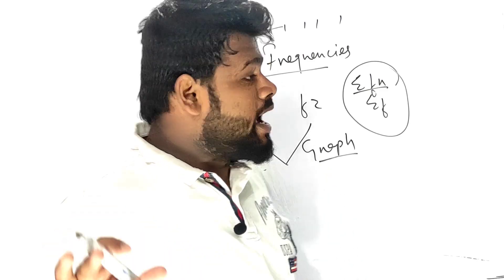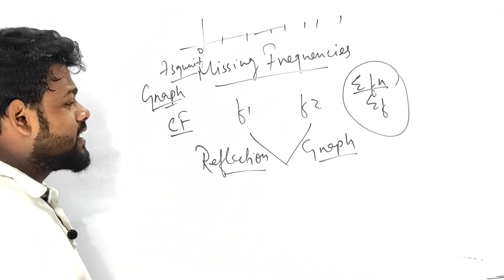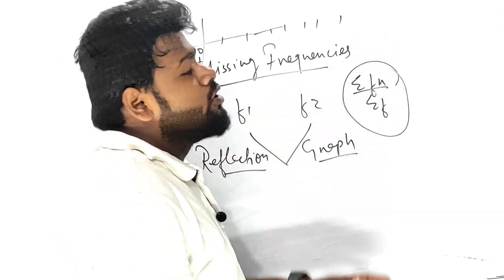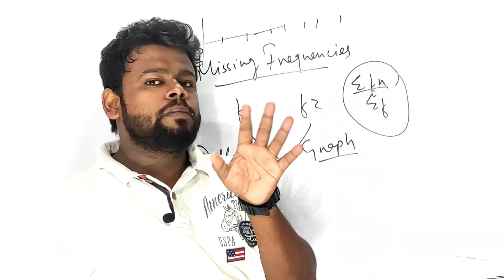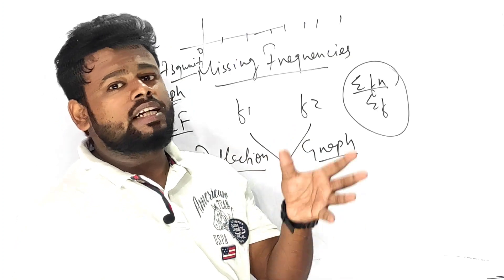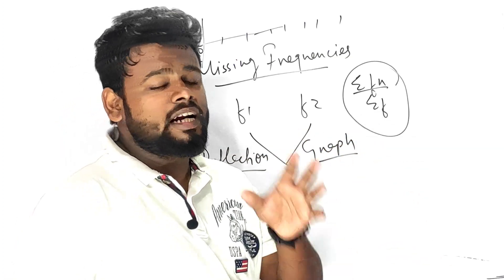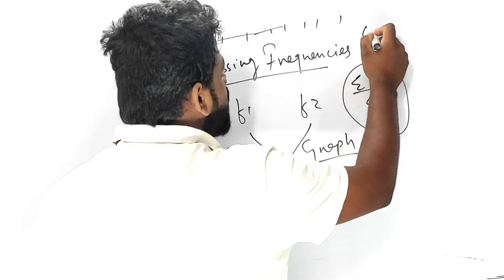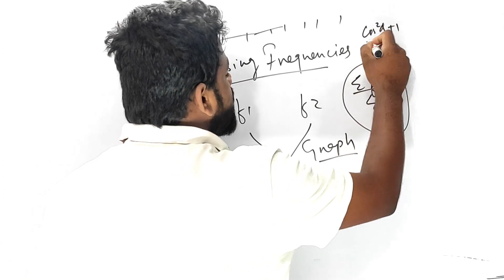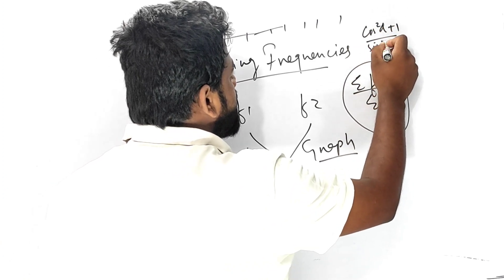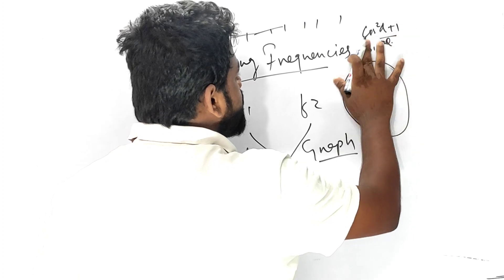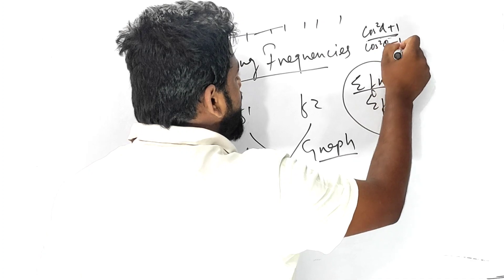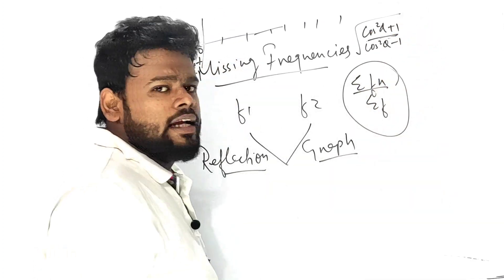People, please practise rationalizing the denominator in the case of trigonometry. Also practise the standard values: cos 60°, cos 30°, cos 90°. These are very important. For example, expressions like cos²θ + (1/sin²θ) − 1 under a square root — you have to rationalize the denominator and simplify.